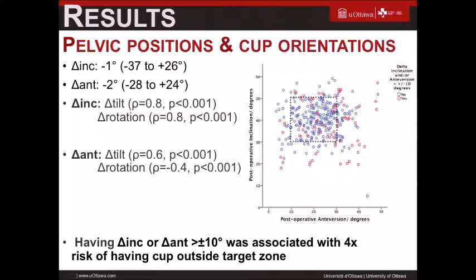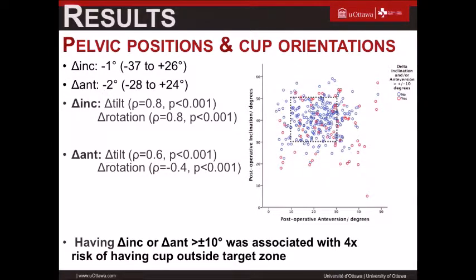There was a significant correlation between the change in inclination as a function of change in tilt and rotation, with a strong correlation — not as strong for change in anteversion comparing change in tilt and rotation. This demonstrates that tilt and rotation changes have a stronger influence on inclination than on anteversion.